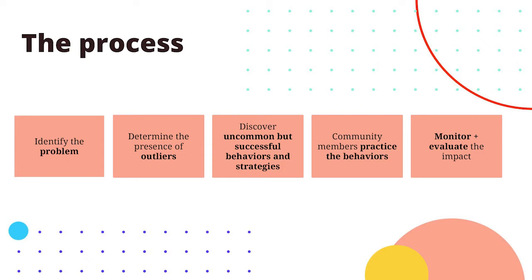It's a five-step process. The first is to identify an intractable problem — one that's been around forever and all attempts to solve it have just not worked. You've not been able to lick that problem.